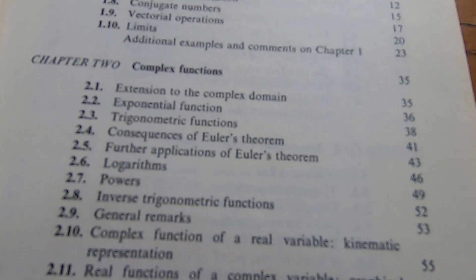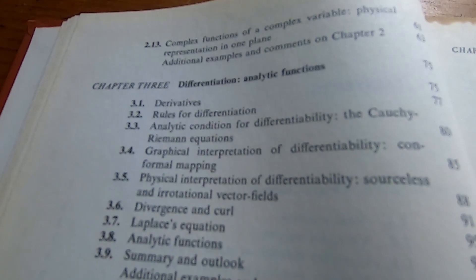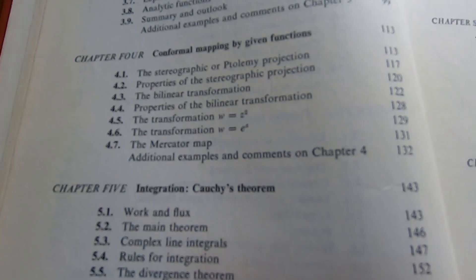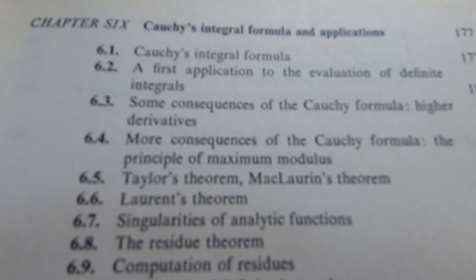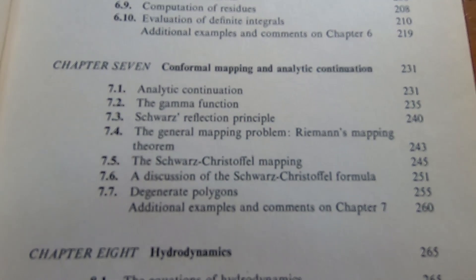Then it goes on to complex functions, and it starts to get a little more involved here rather quickly. Pólya then goes on to differentiation, then conformal mapping by given functions, then Cauchy's theorem, all the usual stuff. And a little bit more, honestly, than a lot of the newer books. Cauchy's integral formula—you see that in every complex variables course.